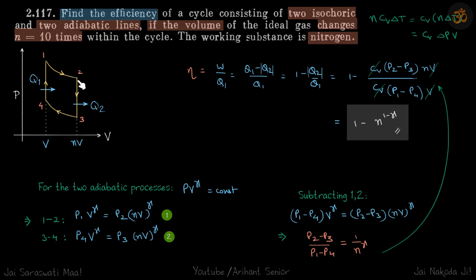In the q2 part, delta P is P2 minus P3, and volume is nV, so this is q2. Similarly, q1 is Cv times delta P, which is (P1 minus P4) times V. We have the ratio (P2 minus P3) upon (P1 minus P4), which we need to find.